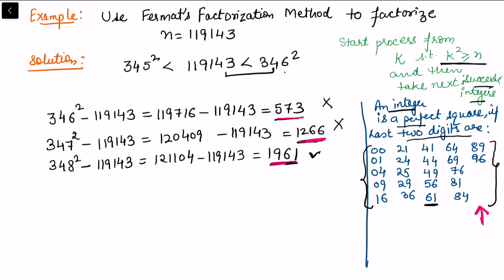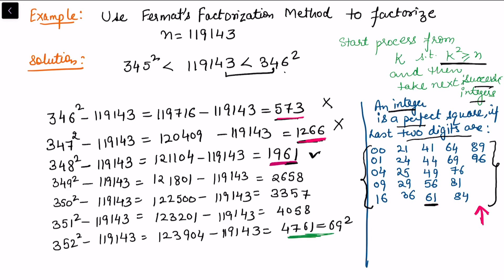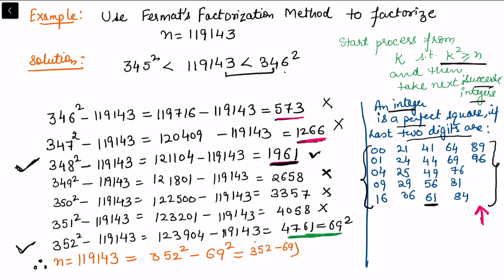We continue the process until we find a perfect square. We get 4761 = 69² at the final step, corresponding to 352² − 119143 = 4761. Therefore 119143 = 352² − 69² = (352 − 69)(352 + 69) = 283 × 421. This gives us the factorization 119143 = 421 × 283, which is the result from Fermat's factorization method.